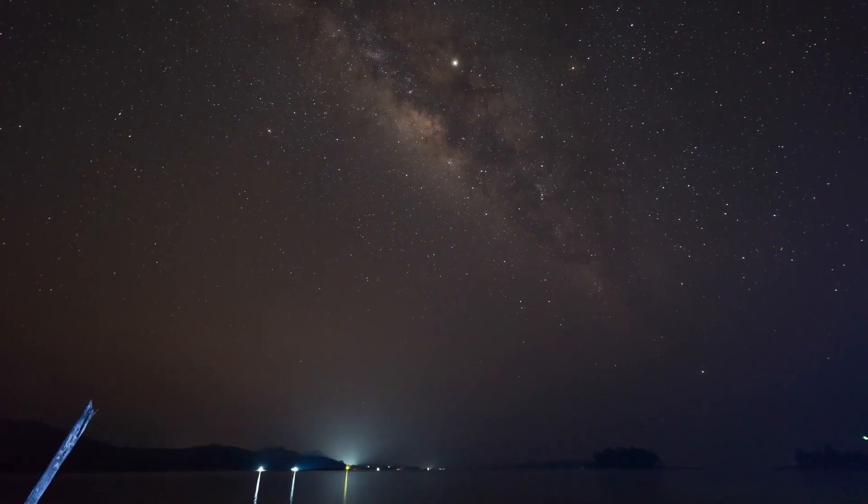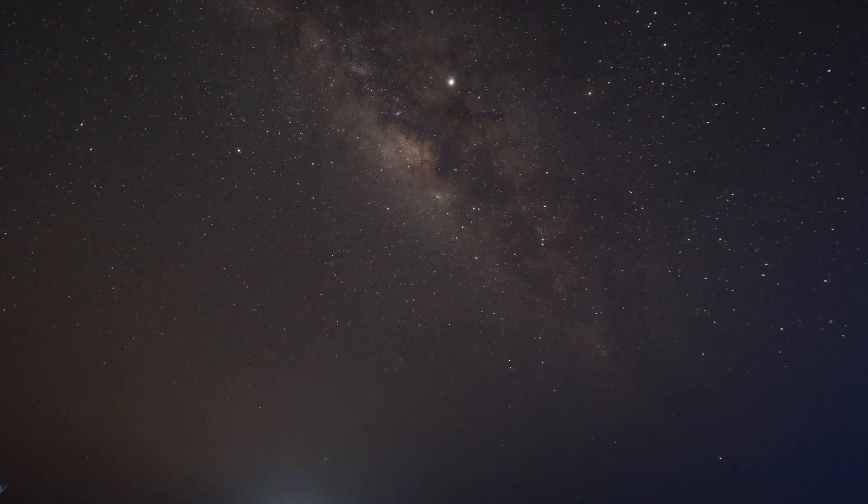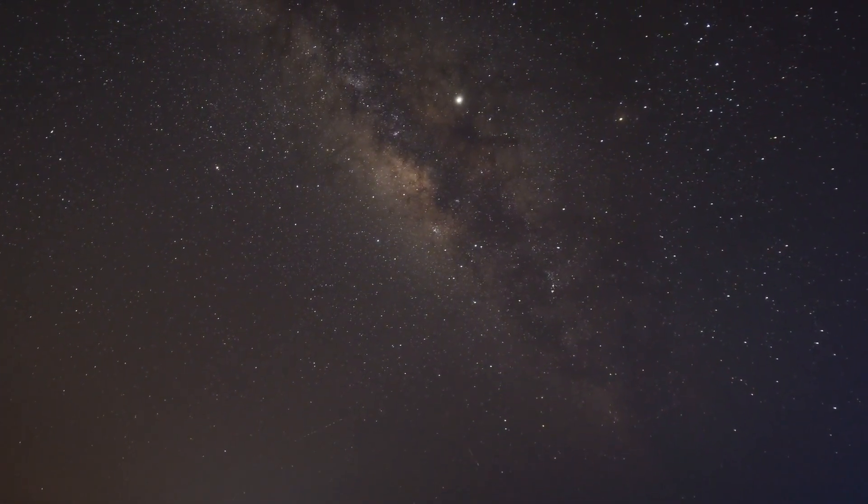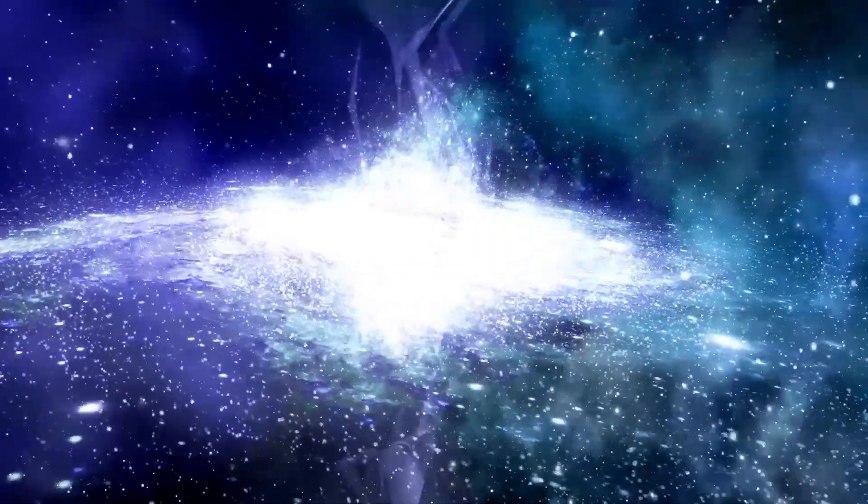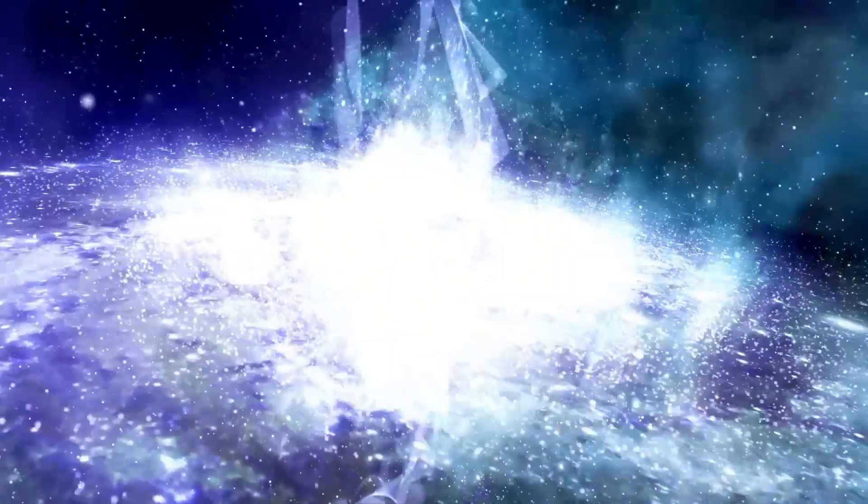So how long might it take for Betelgeuse to go supernova? We're not completely certain, but it could happen as soon as next week, next year, or in 100,000 years. In astronomical terms, that's essentially equivalent to right now. After all, forgetting that the light we see from this star is actually very old, and if it exploded 600 years ago, we wouldn't even know about it. What do you think? Might Betelgeuse have already gone supernova? Or is it just showing some unusual fluctuations? Let us know in the comments.